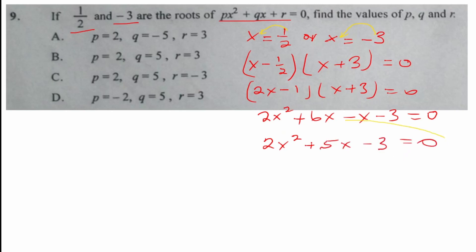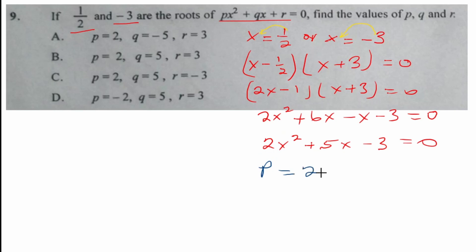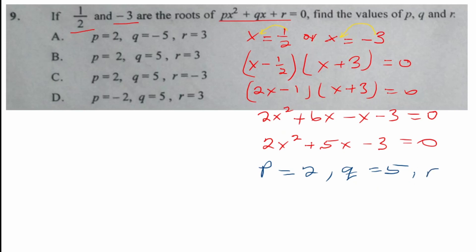Comparing this result with the original equation px squared plus qx plus r equals 0: p equals 2, q equals 5, and r equals negative 3. Looking through the options, that is option C.